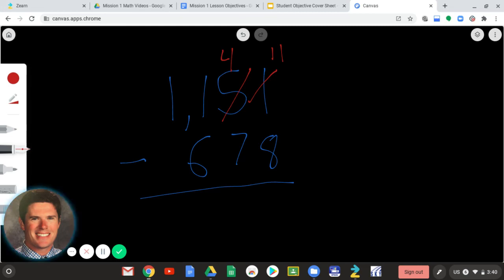Now, can I do 4 minus 7? I cannot do 4 minus 7. I have to borrow from the next place value, in this case the hundreds. I take away 1 from that 1, so it's 0. 1 minus 1 is 0. And then I take that 4, add 10 to it, and it becomes 14. Now I can do 14 minus 7.